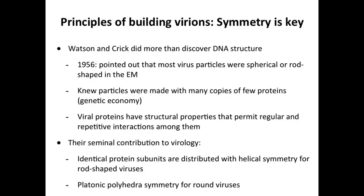They also knew from biochemical studies — purifying a virus, breaking it up, running it on a protein gel — that viruses are made with many copies of a few proteins. For example, poliovirus has four proteins whose molar amounts indicate they are repeated many times. They also reasoned that viral proteins must have structural properties unique to virus structural proteins that allow them to interact with each other in a symmetrical way.